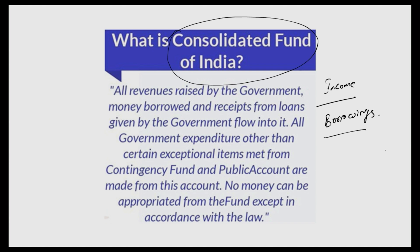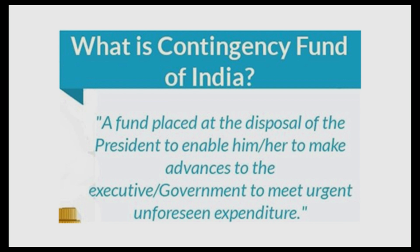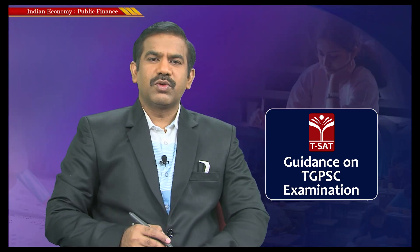The second account is the Contingency Fund — a fund placed at the disposal of the President to enable advances to the executive or government to meet urgent, unforeseen expenditure. It is like an emergency fund, similar to how individuals maintain emergency funds. The government has the right to spend from this fund without any prior approval from Parliament.